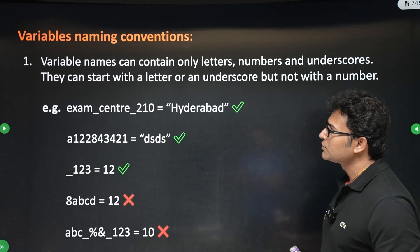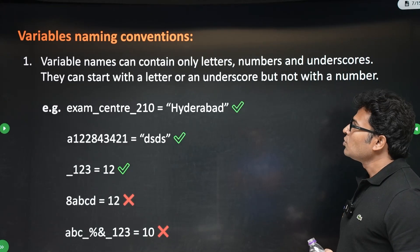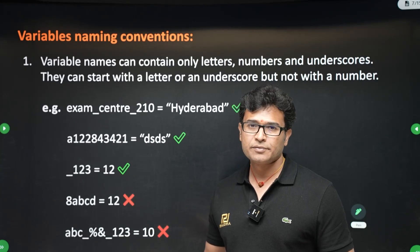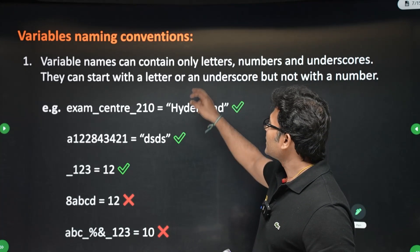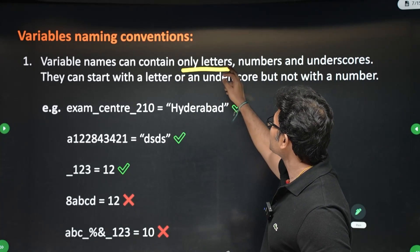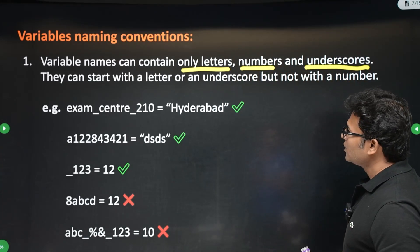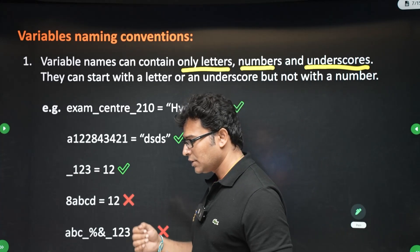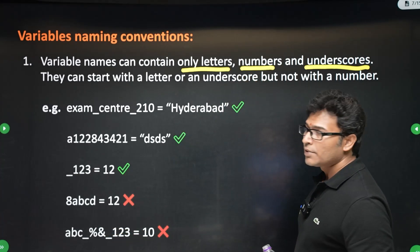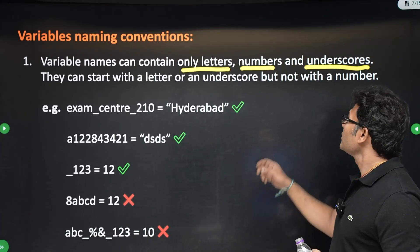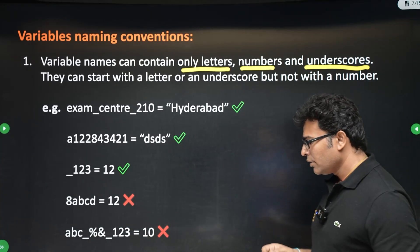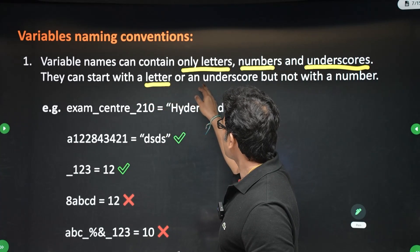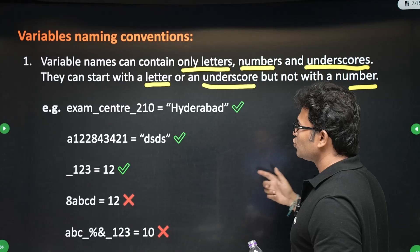Now, what are the naming conventions for a variable? In all the programming languages, the naming convention is almost similar. Variable names can contain only letters, numbers and underscore. You have to use letters like small a to small z, capital A to capital Z, and you can use numbers in it or you can use underscore. And a variable name always starts with a letter or an underscore, but not with a number.